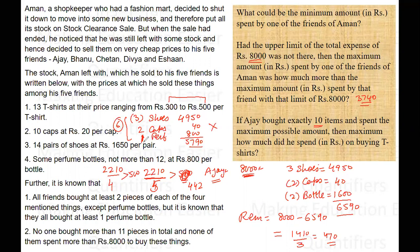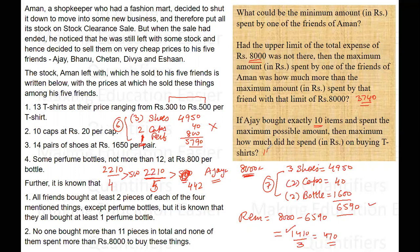If we take two perfumes instead of one, the total expenditure on shoes, caps and perfume bottles leaves a remaining amount of 1410 rupees. With three shoe pairs, two caps, and two perfume bottles, seven items are already bought, leaving three item slots — those three items would be T-shirts. The cost of each T-shirt comes out to be 470 rupees, which is valid. The question asks for the maximum amount he can spend on T-shirts, and the answer is 1410 rupees.